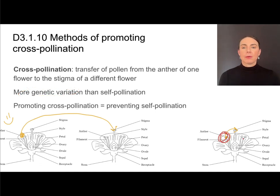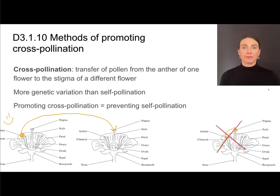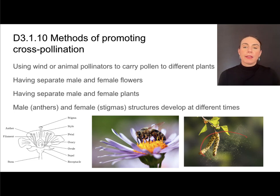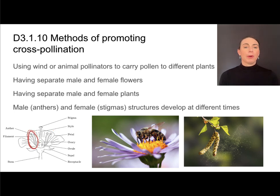If sending male and female gametes from the same individual, there's not a lot of variation in offspring. But from different individuals with different genes and different alleles, this is much better. To promote cross-pollination, we need to prevent self-pollination, and there are several strategies: attracting animal pollinators or wind to carry pollen to a different plant; having separate male or female flowers, or even better, separate male or female plants. In the case of a flower with both female and male parts, one strategy is having the male parts develop at a different time than the female parts, so that when the male part releases pollen the female part is not yet mature or has already passed maturity, preventing self-pollination.